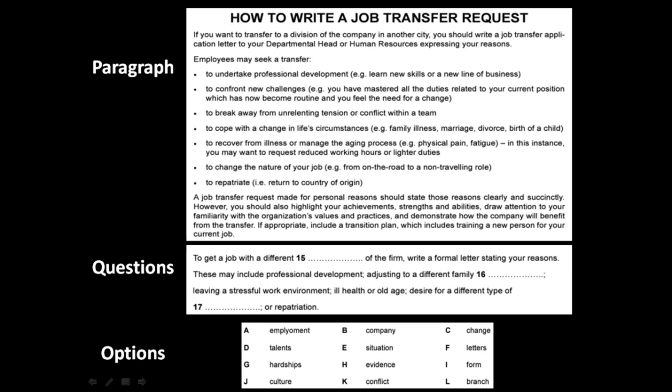Let's solve it together. We'll first go through the questions, then through the options, and then through the paragraph. This paragraph is about how to write a job transfer request. The reason I go through the questions and options first is because some questions have only one option that fits, and you can spot the answer there. Obviously, I won't recommend writing the answers straight away — we'll have to go through the paragraph once, but let's go with the flow.